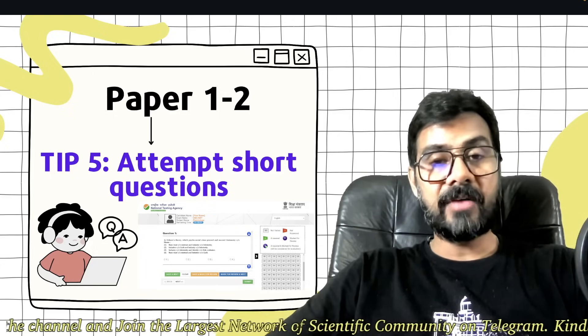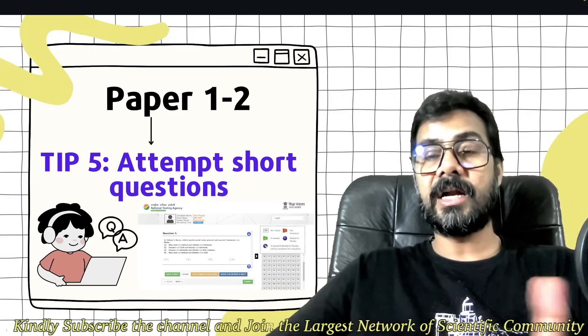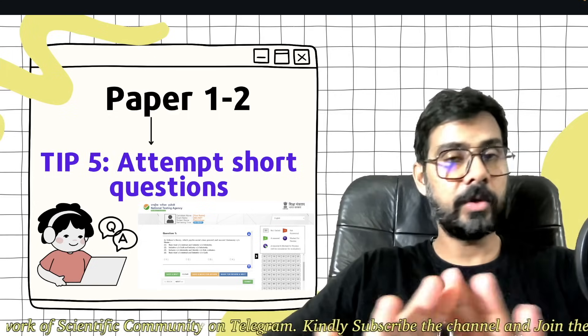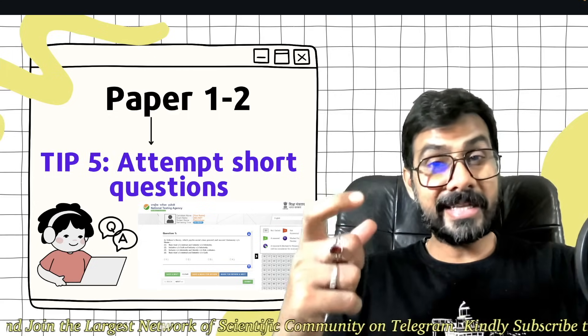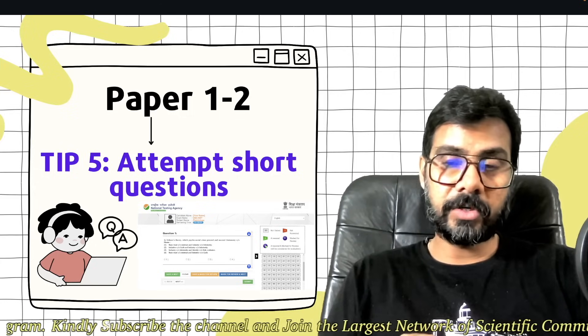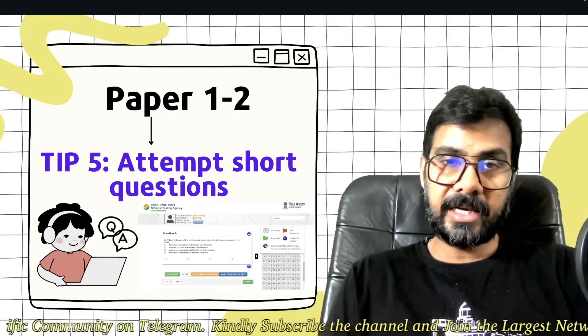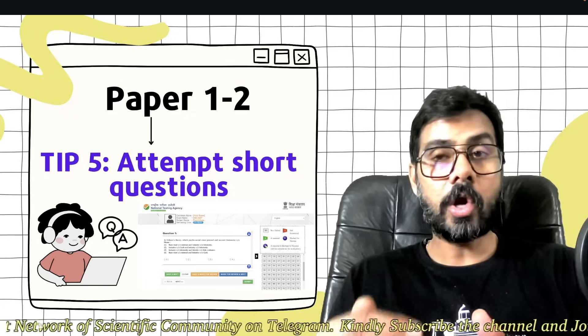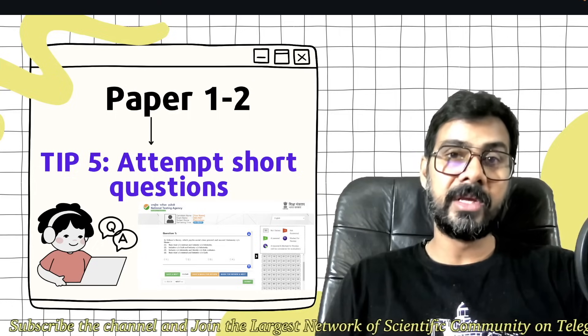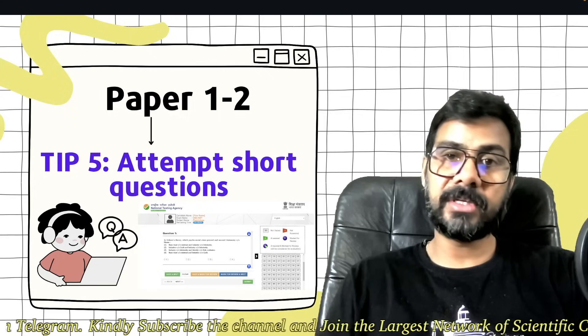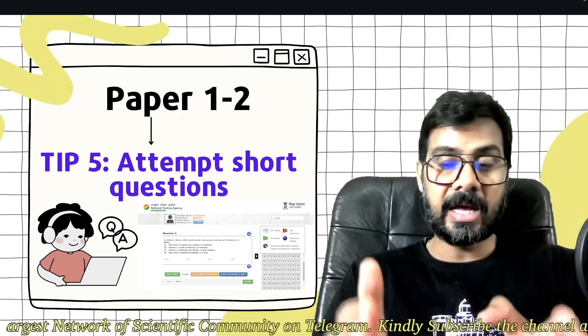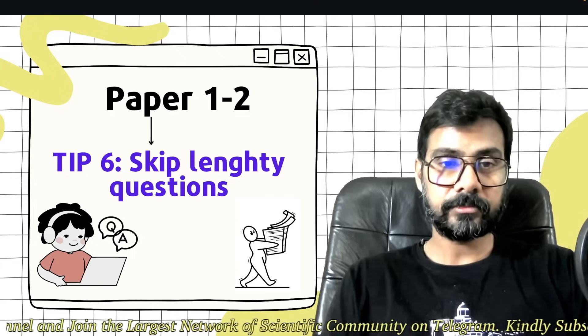Tip 5: Attempt short questions. When you start reading paper one and paper two, just read the questions. If questions are lengthy and you don't understand after reading once, just skip it. Short questions like 'what is mean, mode and median', 'what is correlation' - these are short questions. Attempt all short questions as soon as possible. For 5 questions, take maximum 8-9 minutes, not more. One question one minute is very much. Try to finish all short questions within half time.